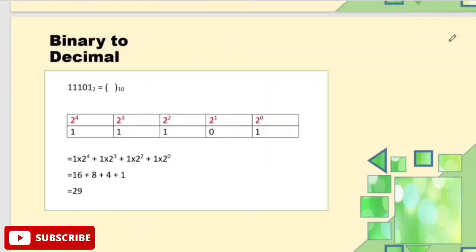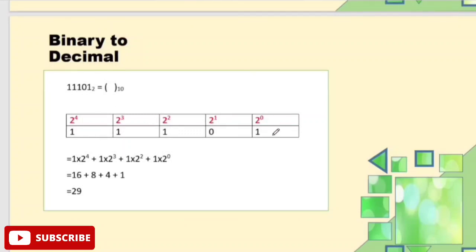Next is binary to decimal conversion. We already covered decimal to binary. To convert a binary number to decimal, we assign positional values from the right-hand side. The first digit gets 2 to the power 0, next is 2 to the power 1, then 2 to the power 2, 2 to the power 3, and 2 to the power 4.